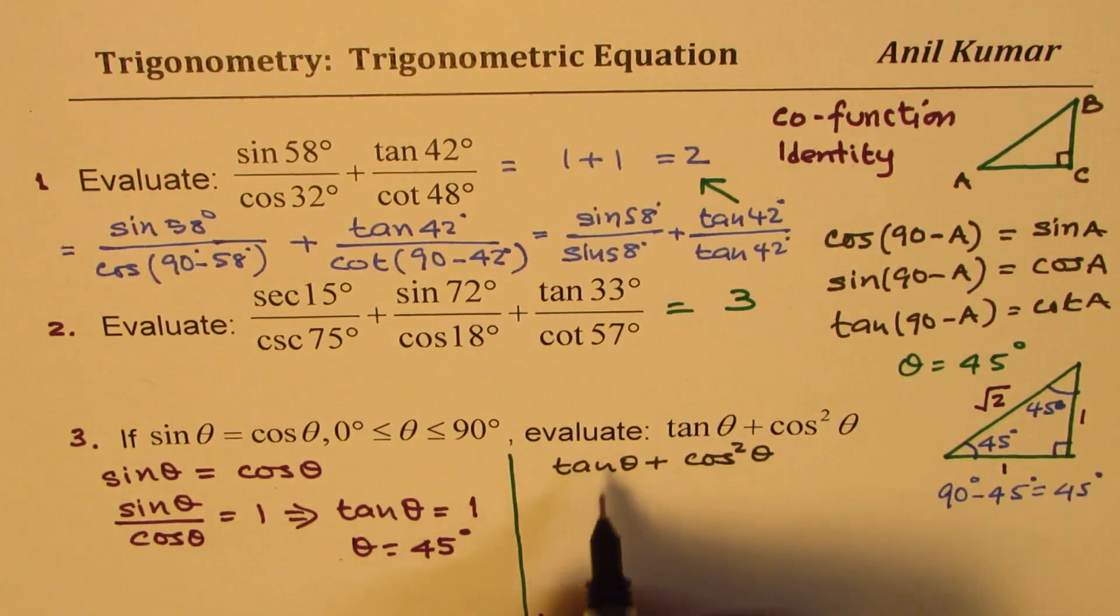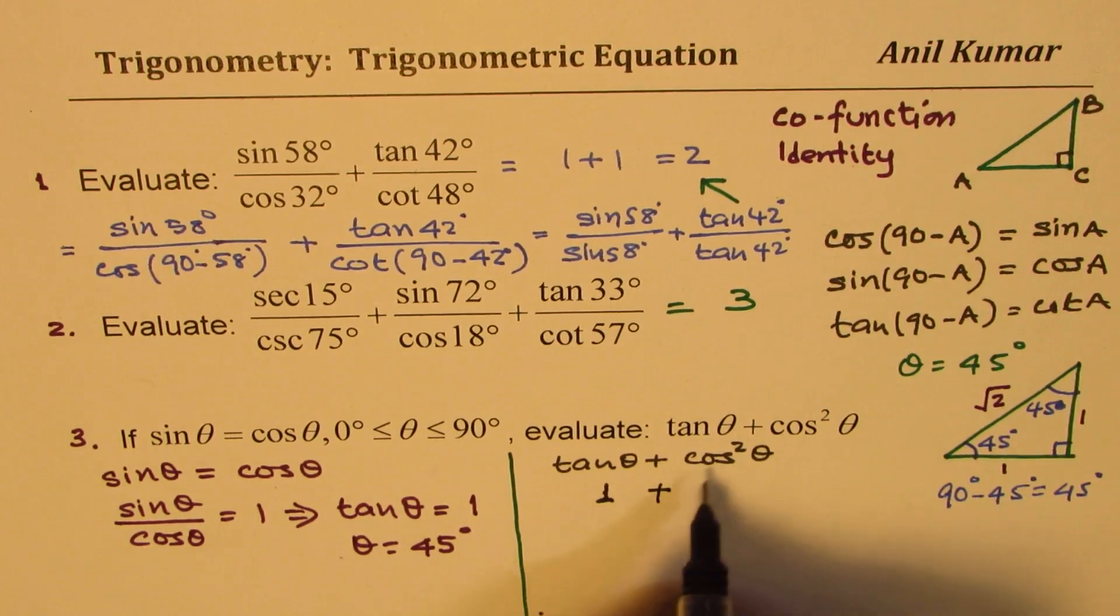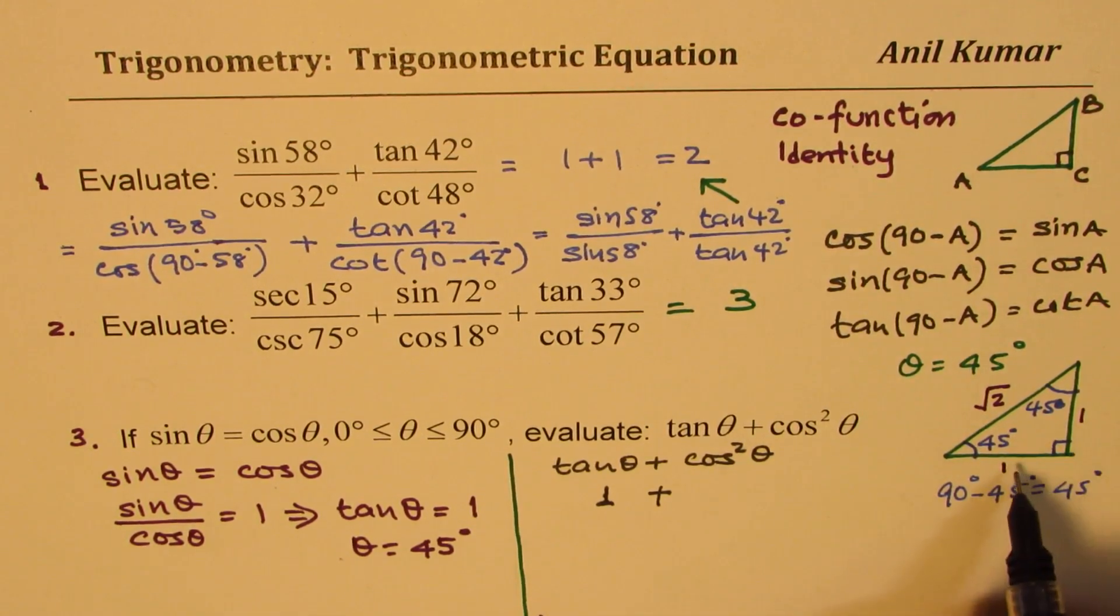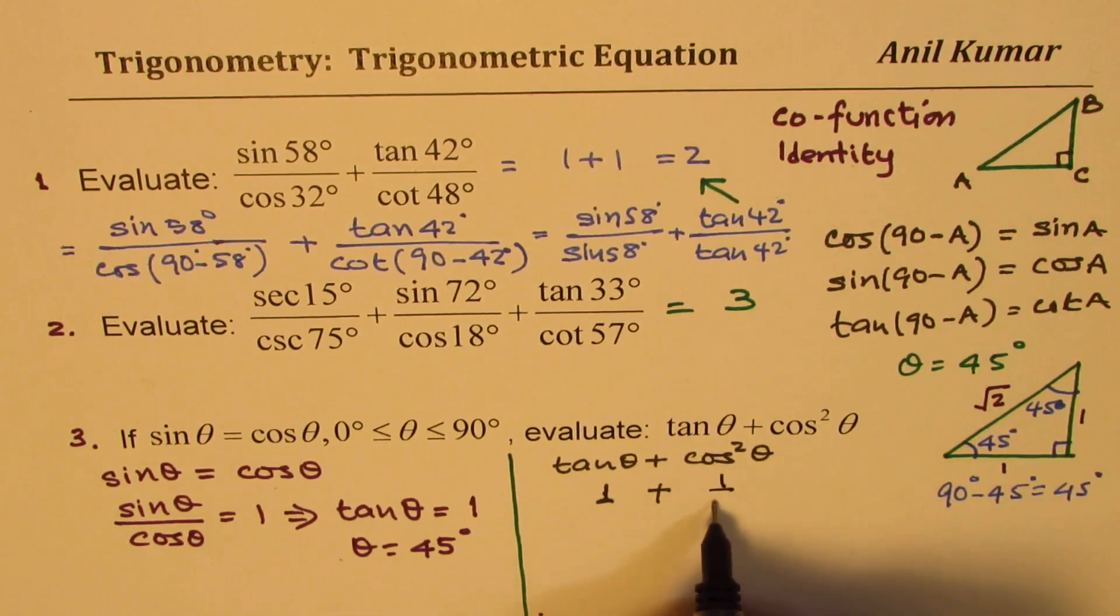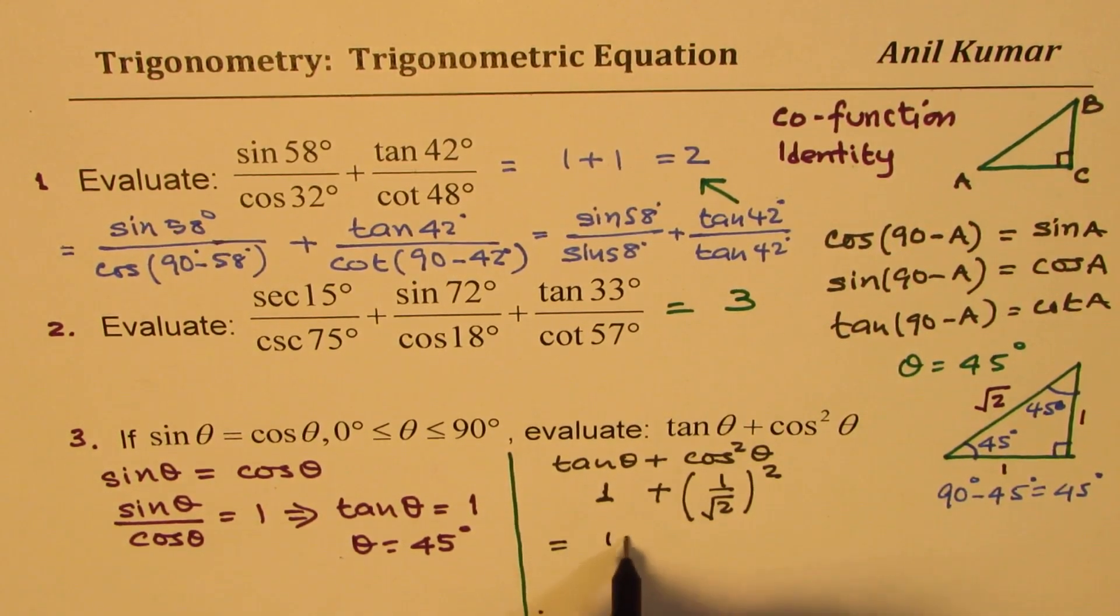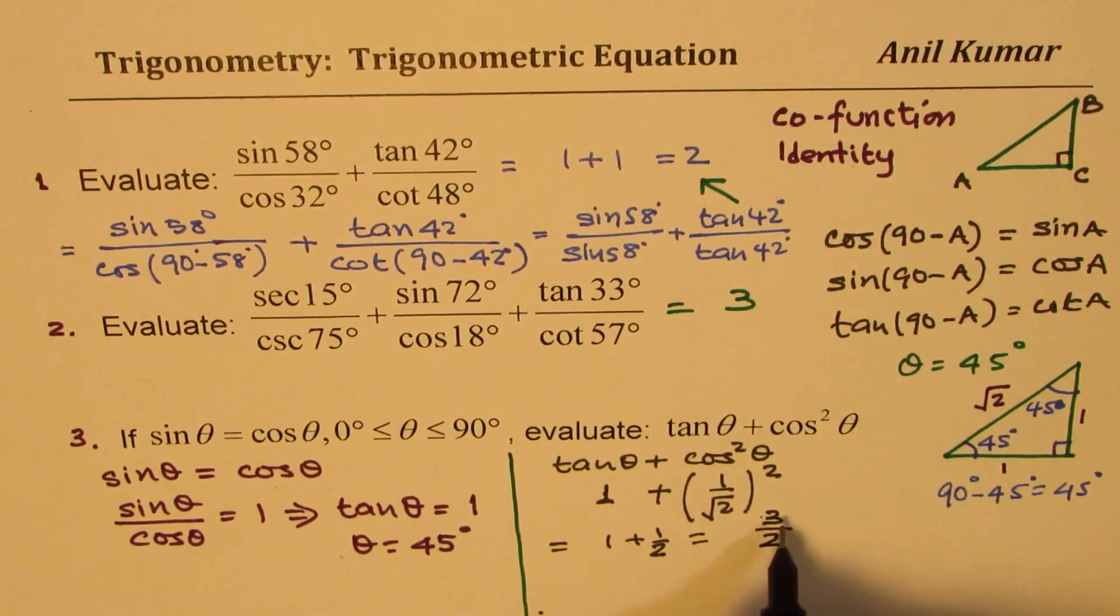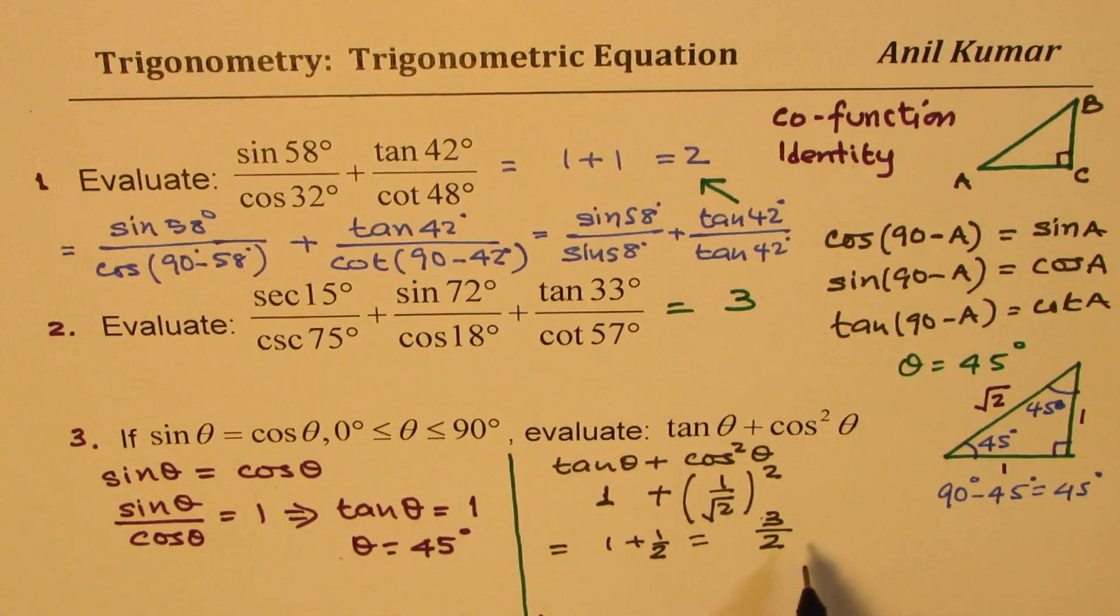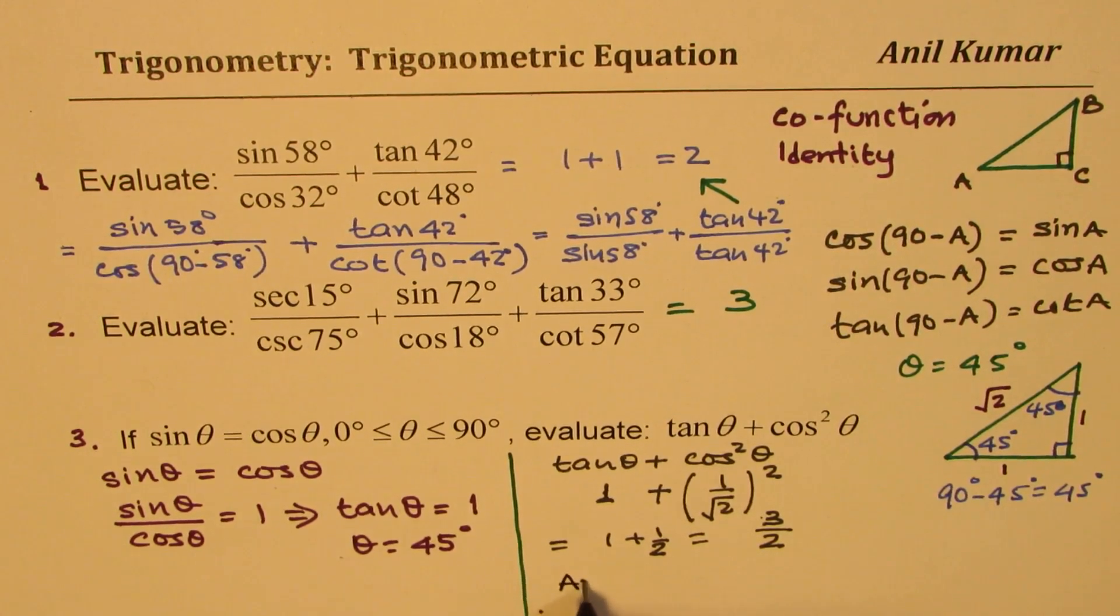So tan theta is 1, we know this. Tan theta is 1 plus what is cos theta? Cos theta is 1 over square root 2. It is 1 over square root 2 and we need to square this. That is 4. So that is equal to 1 plus half or 3 by 2.